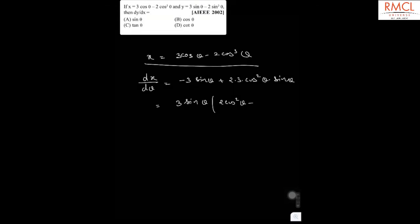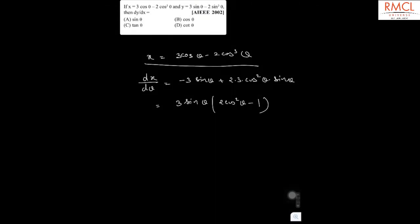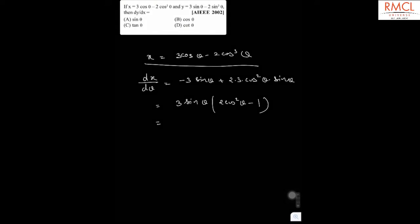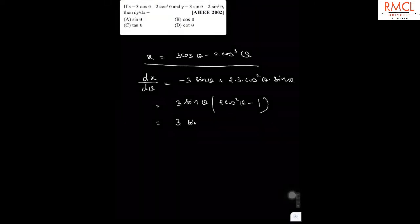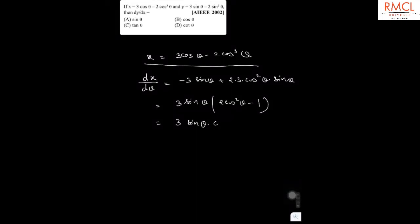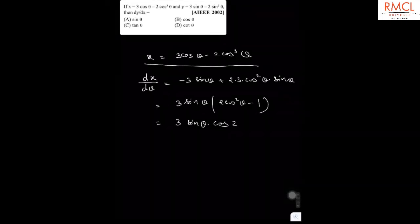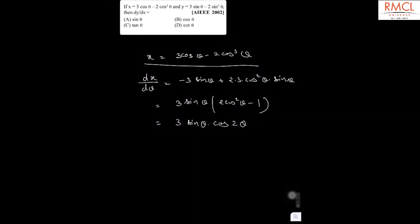And we know that 2 cos square theta minus 1 is cos 2 theta. So it is 3 sin theta cos 2 theta. So this is dx by d theta.